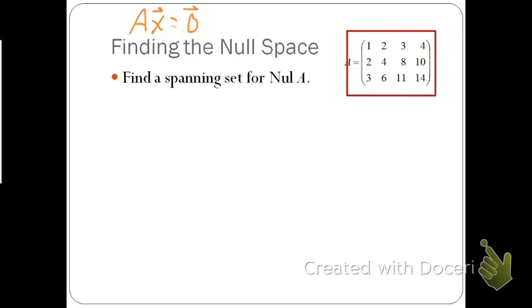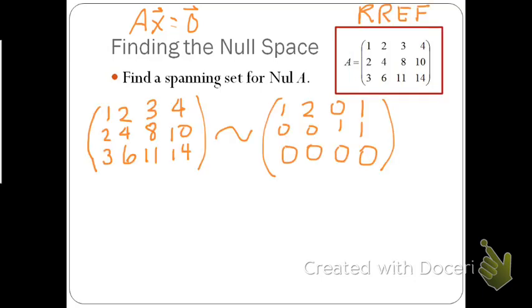Given this matrix A, the easiest way to find the set of all solutions is to put this matrix into RREF, reduced row echelon form. Going through the EROs, you will come up with this matrix here. We notice we have a pivot here and a pivot here, which tells me that x2 and x4 will be free variables.